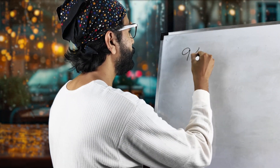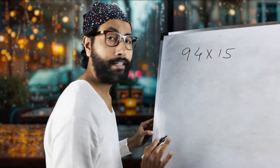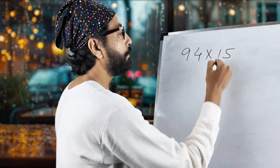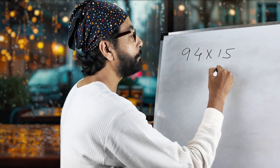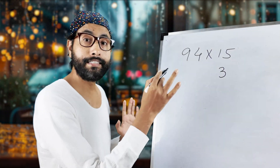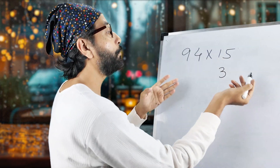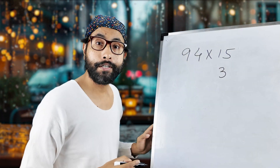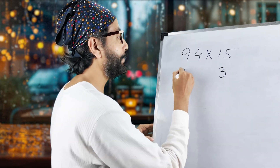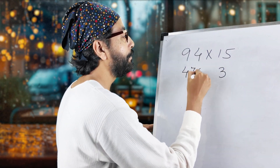Let me show you another one: 94 multiplied by 15. So, 15 doubled means 30. I'm not going to write 30 because that zero means multiplied by 10, and I'm going to use it on the other side. So 94 becomes 47. So it's 4, 7, and that zero goes on this side.